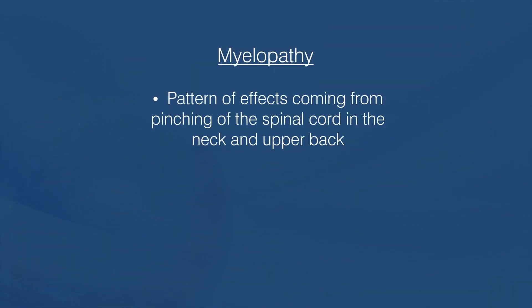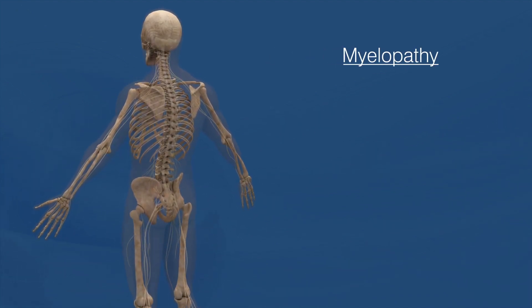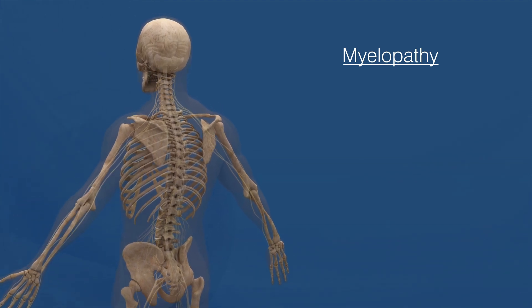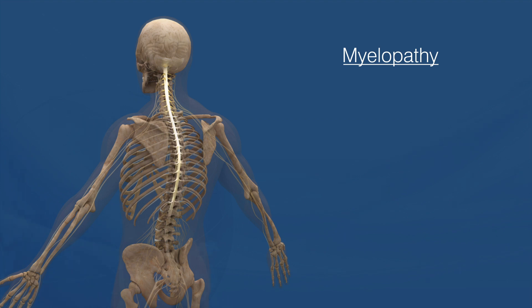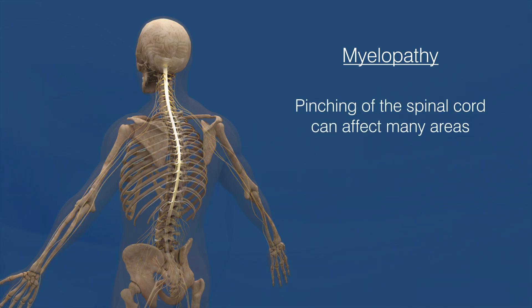Myelopathy — what is it? This is the pattern of effects coming from the pinching of your spinal cord in your neck and upper back. While a pinched nerve causes specific patterns of numbness and weakness to individual areas and muscles, a pinching of the spinal cord will cause different effects. The spinal cord is the extension of your brain. For most people, that brain extension ends at the level of T12 to L1, which is located about the upper portion of your back. While nerves come off the spinal cord and provide signals to a specific area, pinching of the spinal cord can affect many areas.